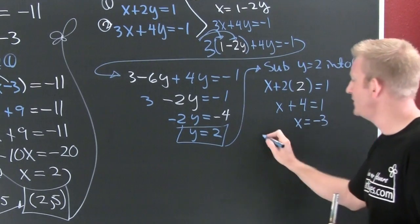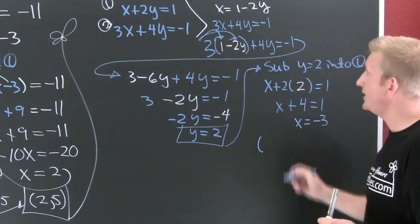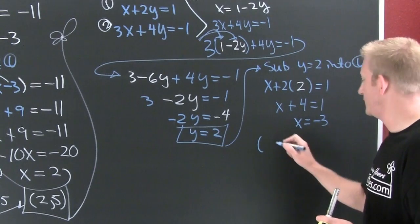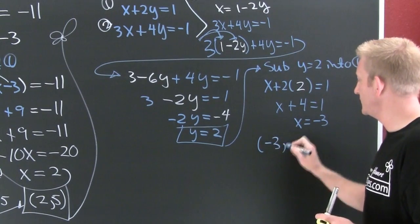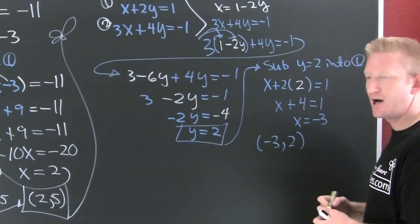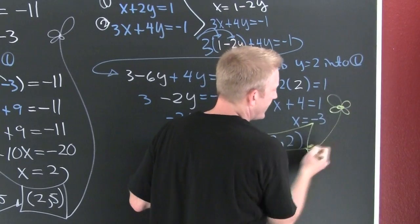And then what's my point? My point is the solution to a system is a point and this one is gonna be (-3, 2). Then what do you do? Box and grow some flowers.